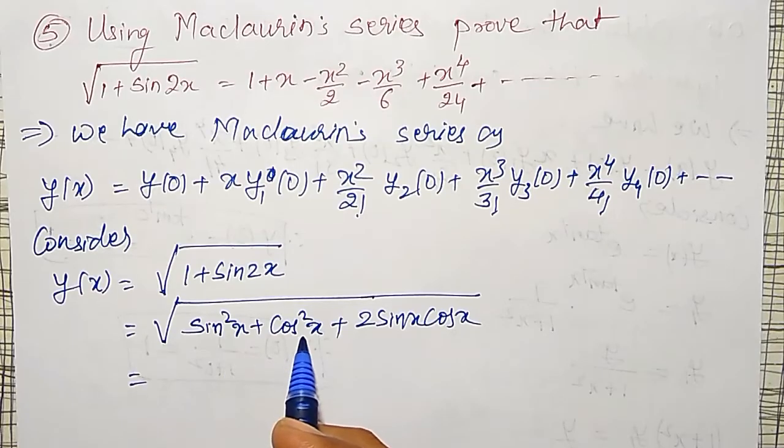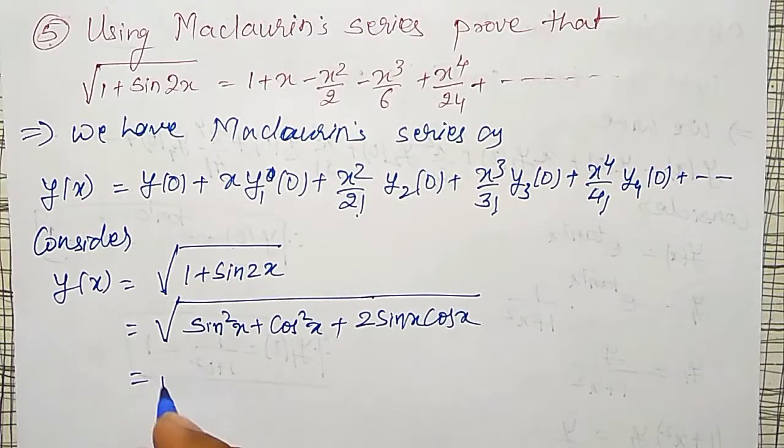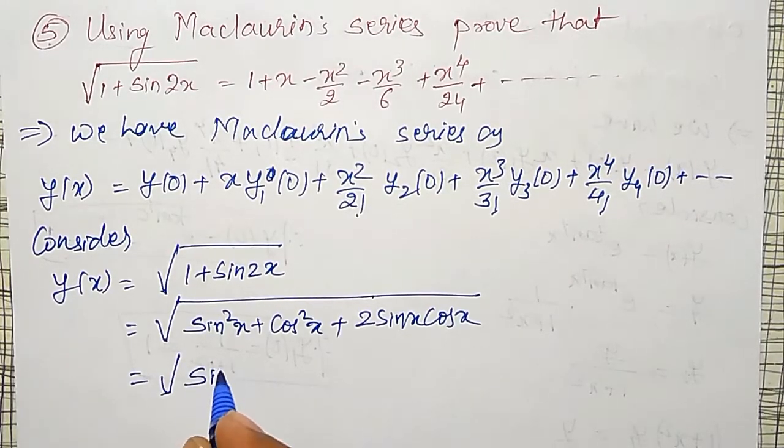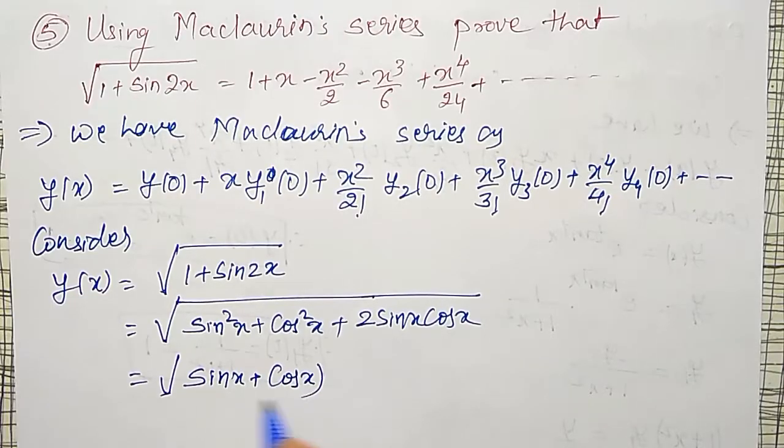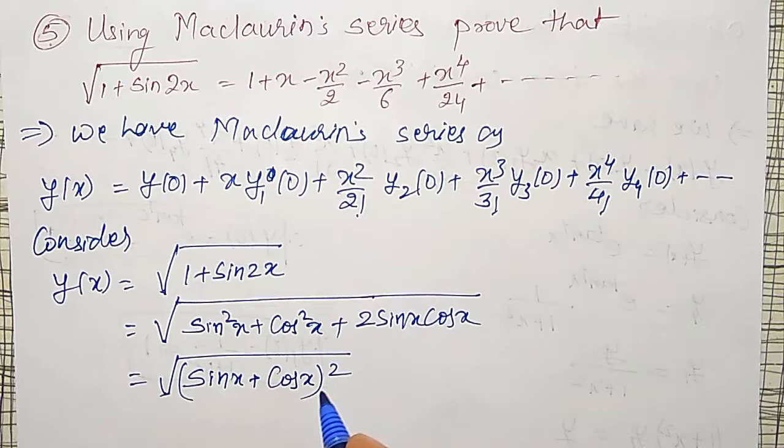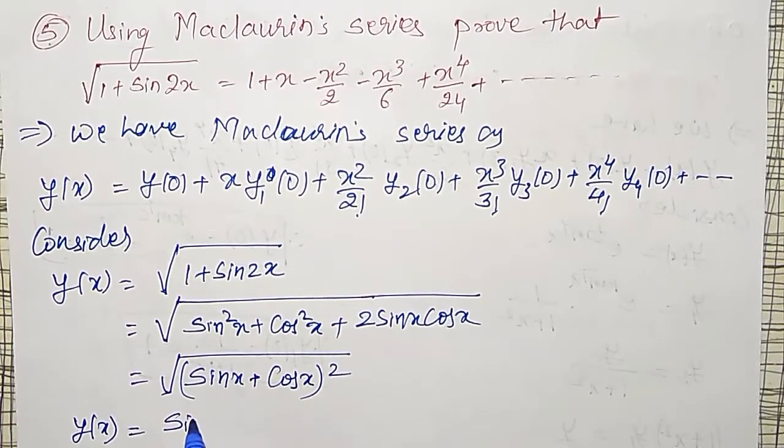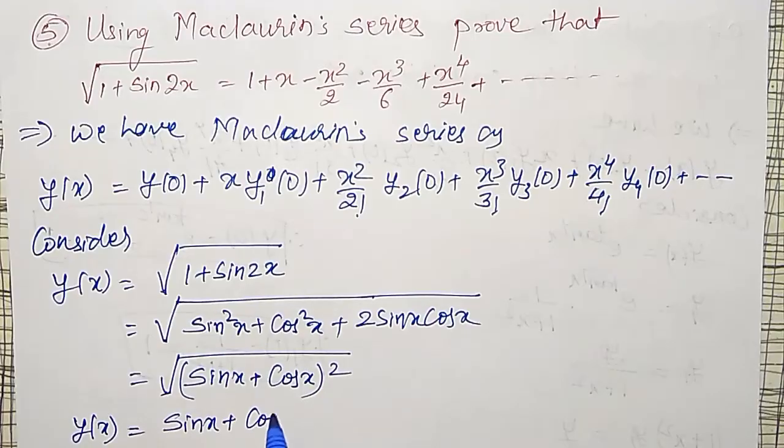And now you can find out here sin squared x plus cos squared x plus 2 sin x into cos x. That is a squared plus b squared plus 2ab type. This is a perfect square. That is square root of (sin x plus cos x) the whole square.